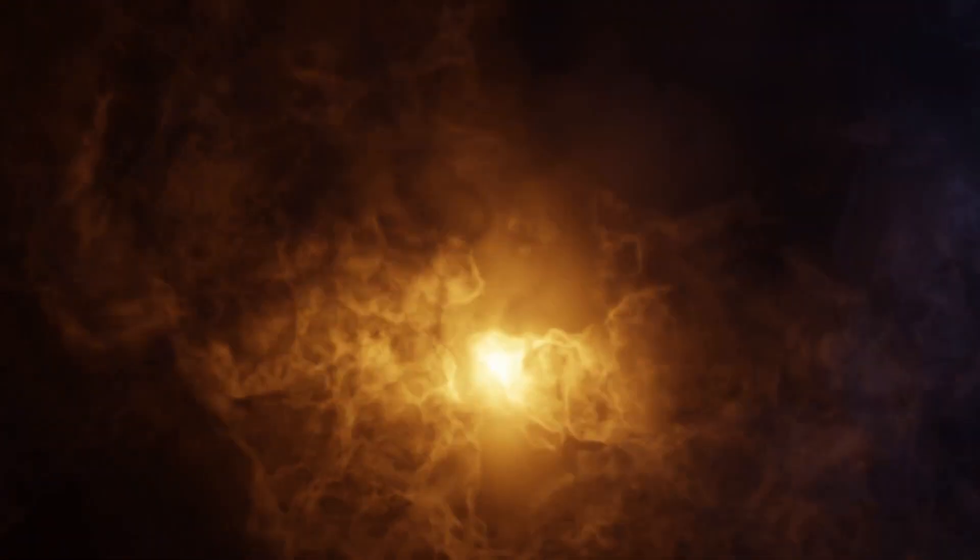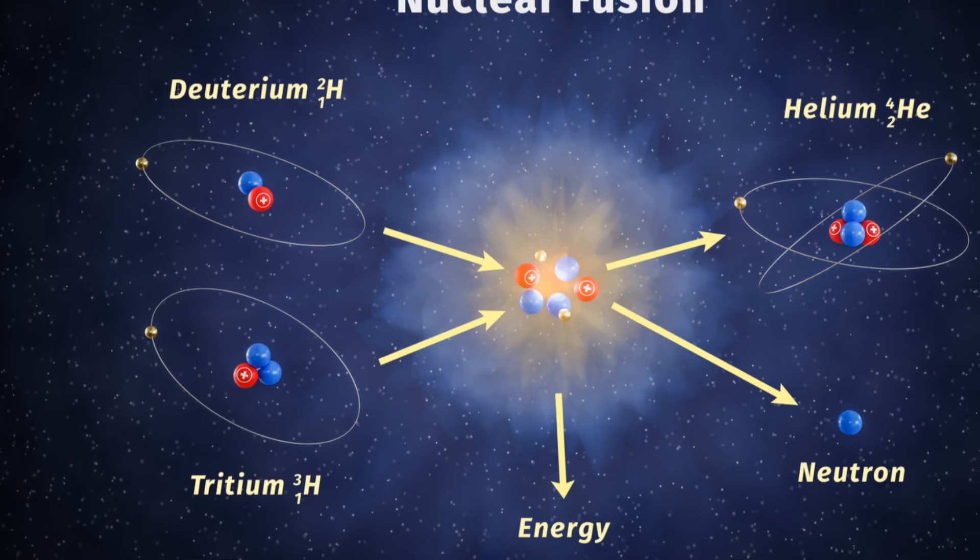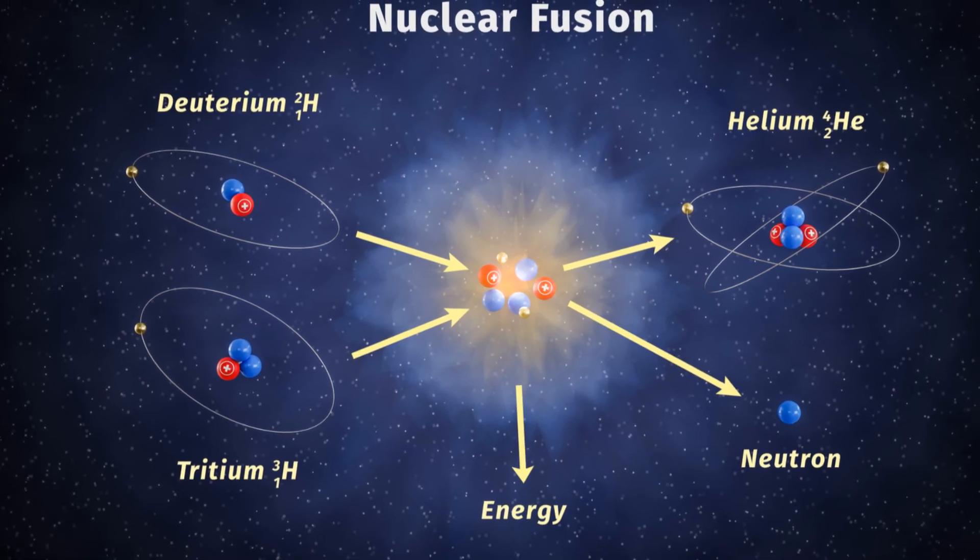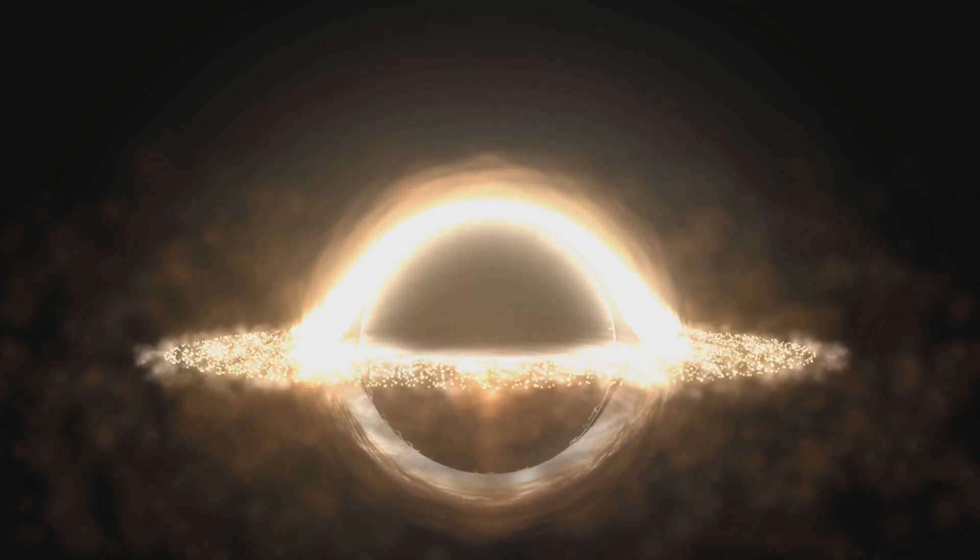If the protostar's mass was enormous, around 10,000 times the mass of our sun, something extraordinary happened. The pressure and heat in the core were so intense that the protostar's inner regions couldn't sustain nuclear fusion like normal stars. Instead, the core collapsed further, forming a black hole.